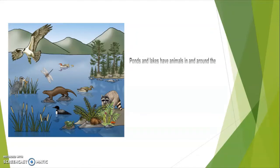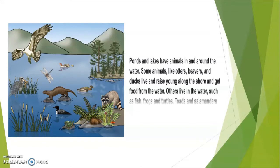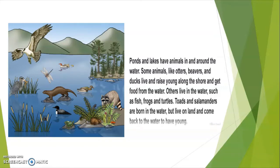Ponds and lakes have animals in and around the water. Some animals like otters, beavers, and ducks live and raise young along the shore and get food from the water. Others live in the water, such as fish, frogs, and turtles.